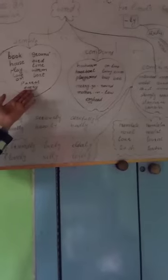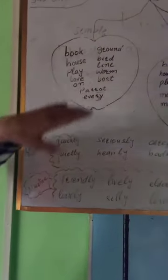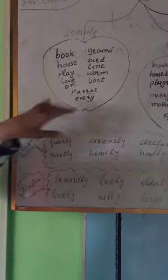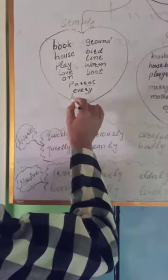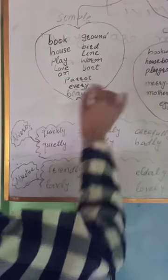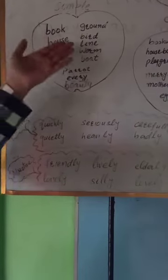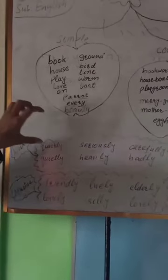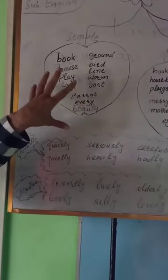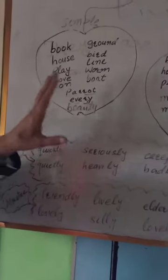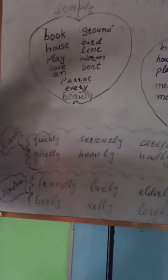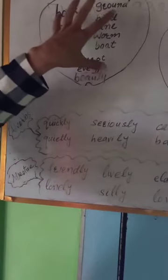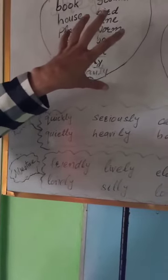Let's look at simple words: book, house, play, love, parrot, beauty, ground, bird, line, worm, boat. A close look at these words shows they cannot be divided into meaningful parts. They have meaning obviously, but cannot be divided into meaningful parts, and they have an independent existence — they can exist independently.